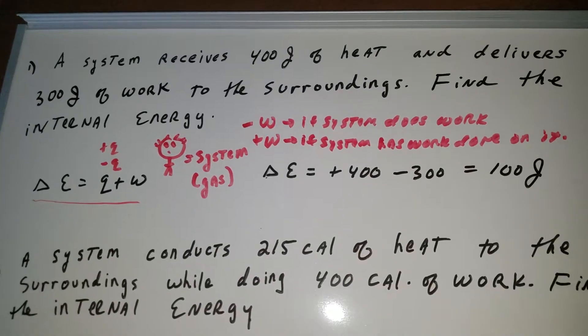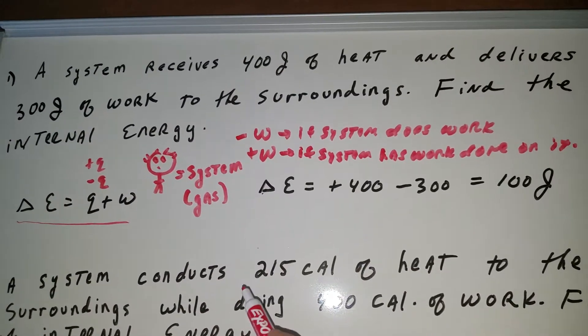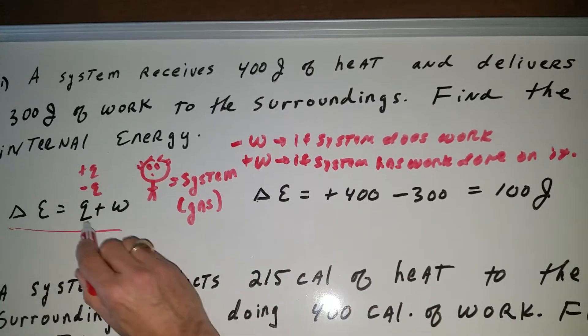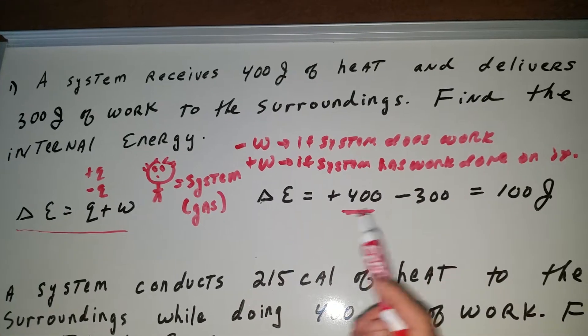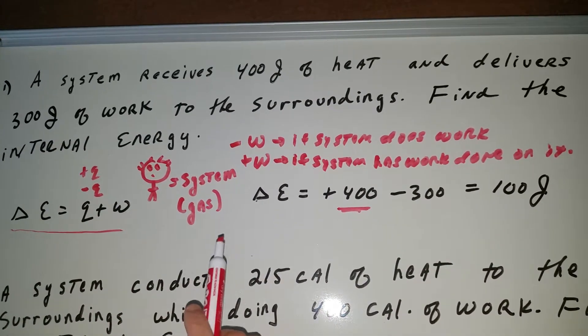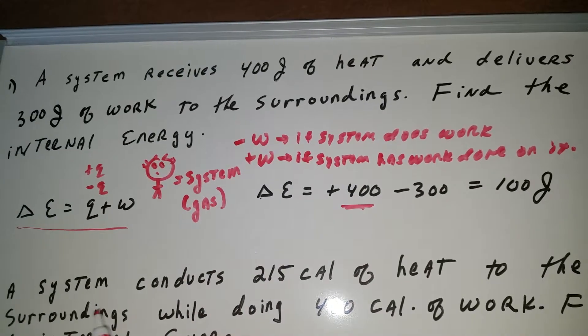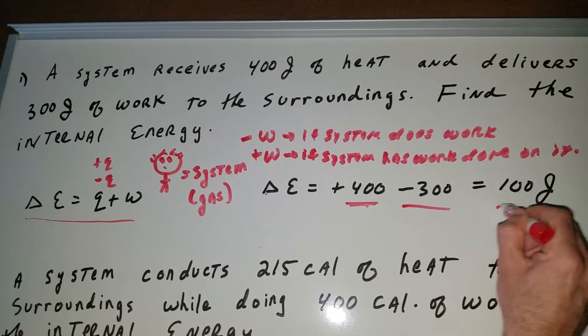First of all, the system is receiving heat. Receiving means you're absorbing heat, so that first term, the Q, would be positive. And the system is delivering or doing work to the surroundings. Since the system is doing the work, you are the system, that's negative. So you put in a negative, so you get 400 minus 300 is 100 joules.